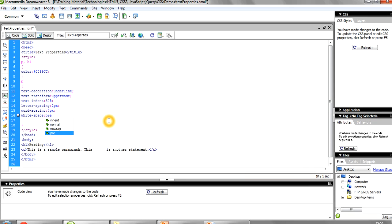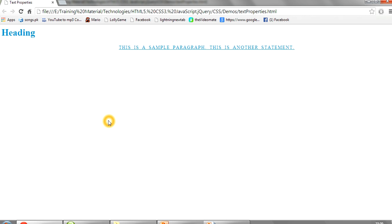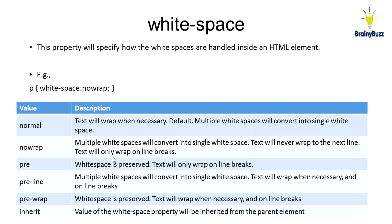If you write 'pre' and save it, you can see there is a difference — the gap between words is maintained. With the 'pre' value, the white space is preserved. In 'pre-line', multiple white spaces convert into a single white space, but text will wrap when necessary and on line breaks. With 'pre-wrap', white spaces are preserved and text will wrap when necessary and on line breaks. This way you can set the white-space properties.